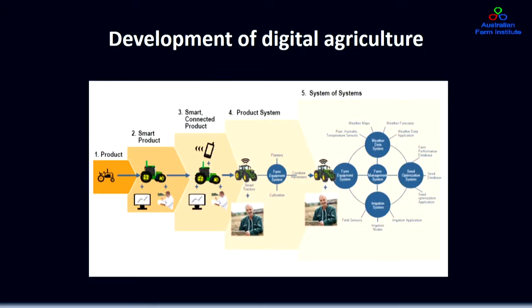A lot of participants have quickly realised that the competitive advantage lies in having an algorithm that works better than a competitor's system. The other interesting development is how these systems have progressed, particularly in the cropping industry. They started off with an implement like a tractor becoming a smart product, incorporating sensors and machine data. It then became smart and connected through GPS and mobile communications technology, and then became a product system where your tractor talked to your implement with a feedback system.